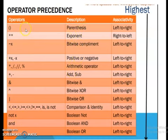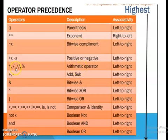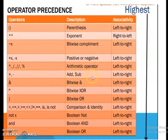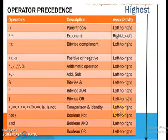The highest precedence is for parenthesis. First is parenthesis, second is exponent, third is bitwise complement, then positive or negative arithmetic operator. Then star, slash, double slash, modulo — that is multiplication, division, floor division, modulo — all have the same precedence. Then addition and subtraction have the same precedence. Then bitwise AND, bitwise XOR, bitwise OR. Then comparison and identity operators all have the same precedence, and are read from left to right. Then boolean NOT, boolean AND, and boolean OR.